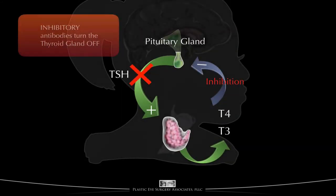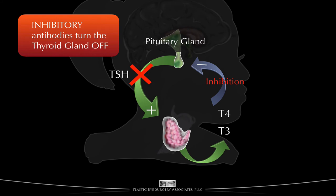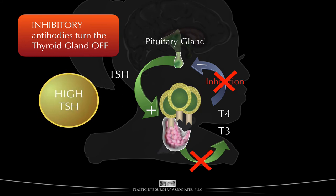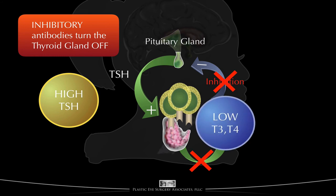Whereas inhibitory autoimmune antibodies turn off the thyroid gland — the binding of the inhibitory antibodies to the TSH receptors turns off the production of T4 and T3. This turns off the inhibition of TSH production, or in effect, turns TSH production on. Even though TSH levels rise, the inhibitory autoimmune antibodies are still bound to the TSH receptors, blocking the binding of TSH, and so T3 and T4 levels continue to drop. The hallmark of inhibitory autoimmune disease is high TSH blood levels and low T3 and T4 blood levels.